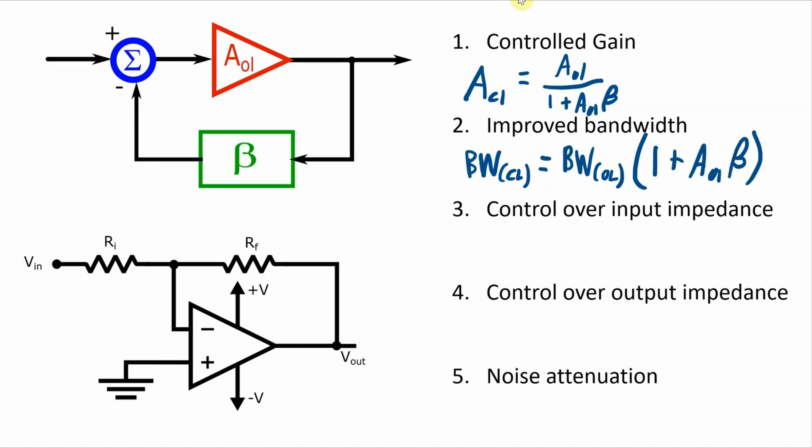And that kind of control depends on the type of negative feedback that you have, transvoltage, transcurrent, etc. And it can give you noise attenuation, for example, the distortion.